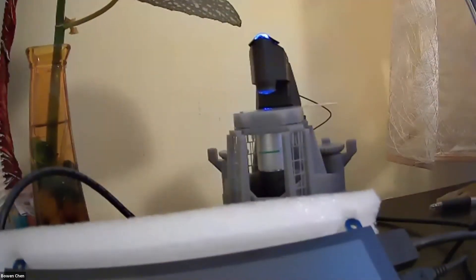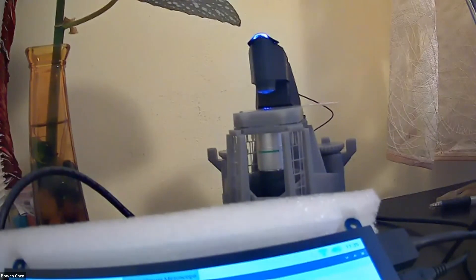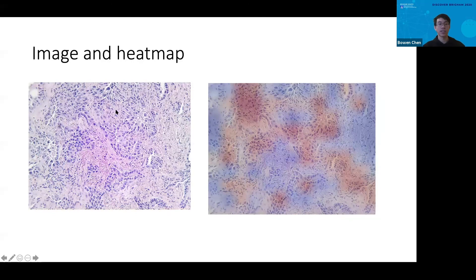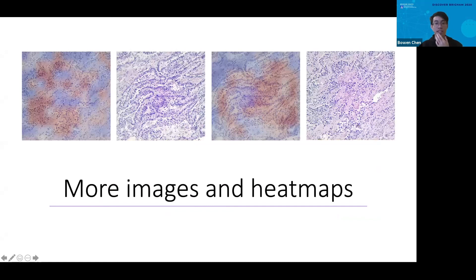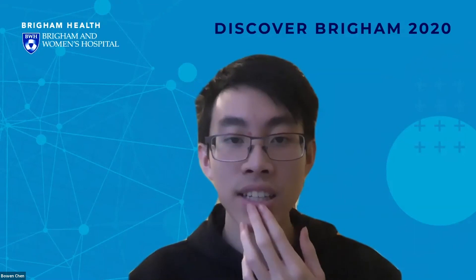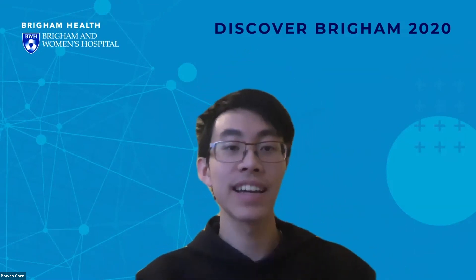The webcam doesn't show the screen very well, which is why I took some images beforehand and fed them to the model. Here is an example image taken from the microscope on the left, and the resulting heat map generated after being run through our model using the Jetson Nano on the right. You can see the heat map shows the relevant regions attended to by the model. Here are some more images as well.